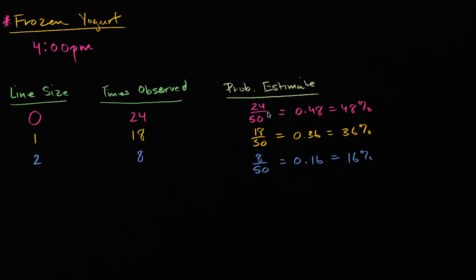And so there's some interesting things here. Remember, these are estimates of the probability. You're doing this by essentially sampling what the line on 50 different days. You don't know. It's not going to always be exactly this, but it's a good estimate. You did it 50 times. And so based on this, you'd say, well, I'd estimate the probability of having a zero person line is 48%. I'd estimate that the probability of having a one person line is 36%. I'd estimate that the probability of having a two person line is 16%, or 0.16.